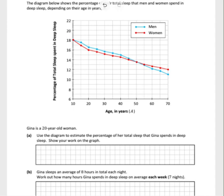Question three. Here we have a graph. On the graph we have the percentage of total sleep spent in deep sleep on the left-hand side, and here on the horizontal axis we have the age in years.